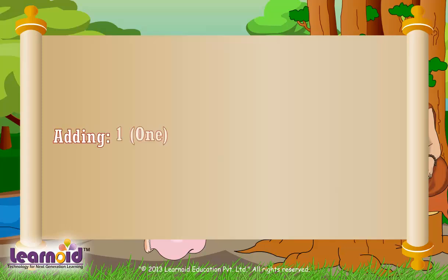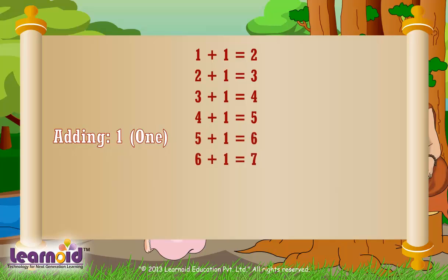Let's learn adding 1. 1 plus 1 is 2, 2 plus 1 is 3, 3 plus 1 is 4, 4 plus 1 is 5, 5 plus 1 is 6, 6 plus 1 is 7, 7 plus 1 is 8, 8 plus 1 is 9, 9 plus 1 is 10. Adding 1 will give the next number.